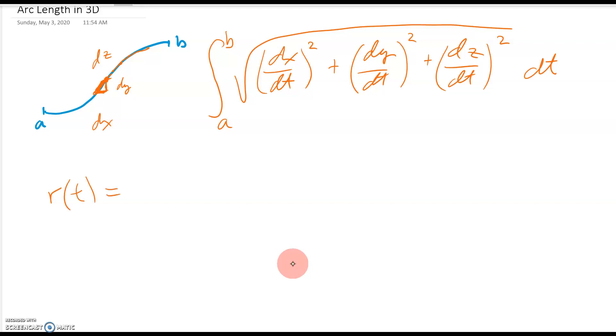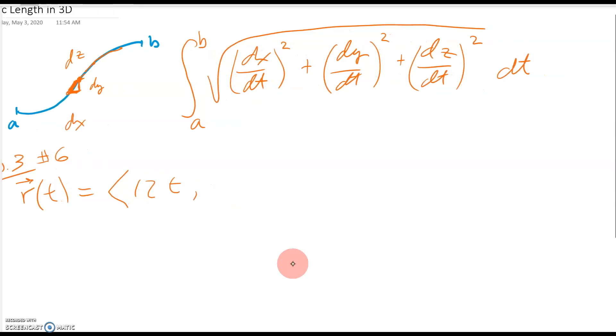So let's say you have, for example, the vector function r of t equals something like, let me pick an example from the textbook. This is section 10-3 in the book, question number six. Okay, so the vector function is 12t, 8t to the three halves power, and then 3t squared. Now, like most textbooks, and then we want to know the distance from zero to one.